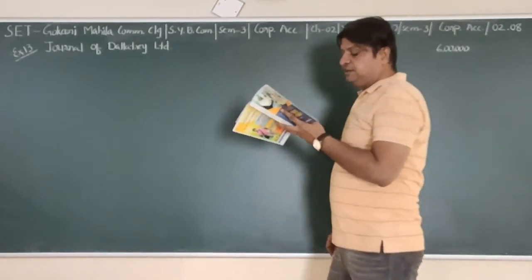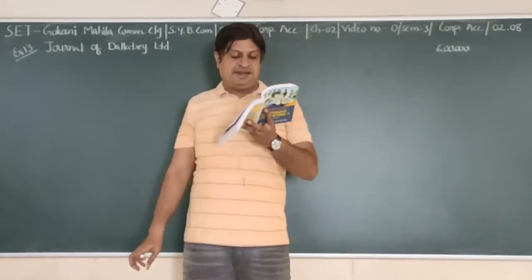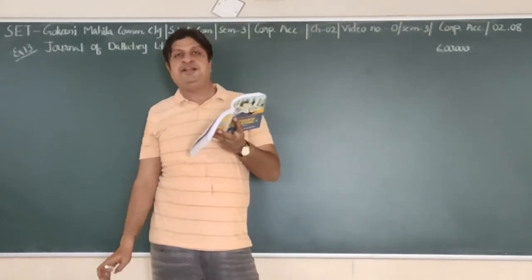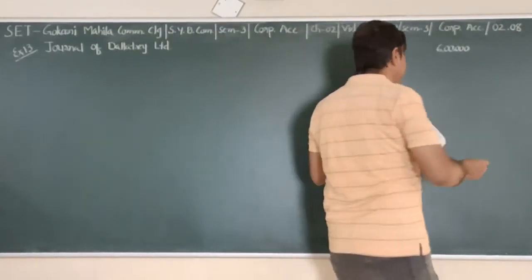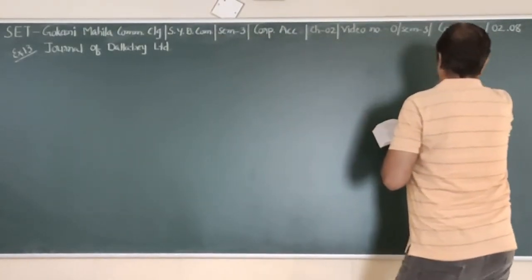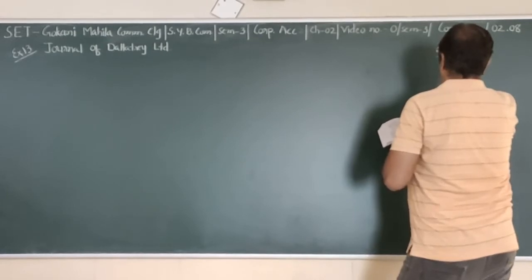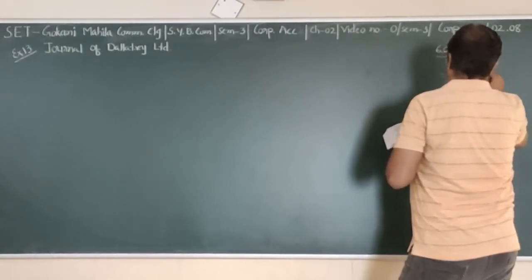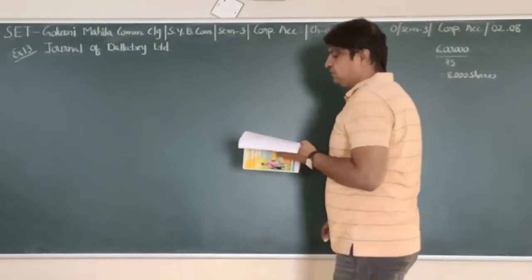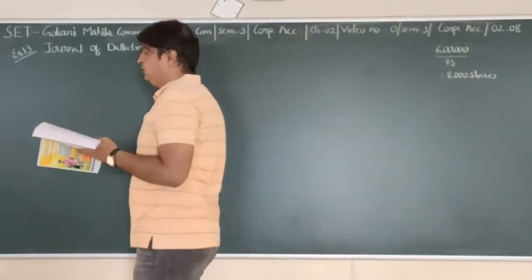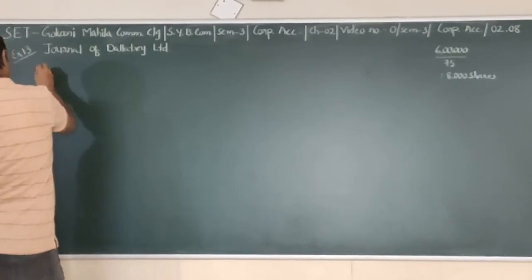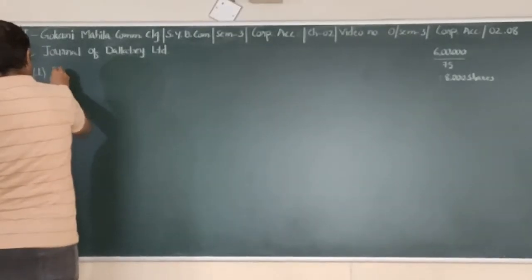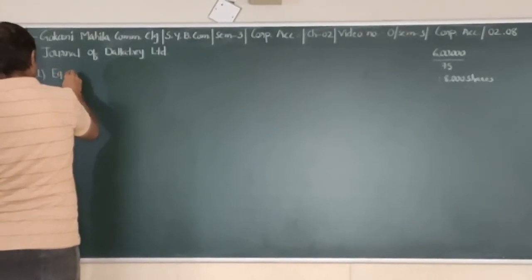In brackets we are given that each share is of rupees 100 and 75 rupees per share paid. So divide by 75, you can get the number of shares. Number of shares is 8000. So 8000 shares and final call of 25 per share, that is to be called up.